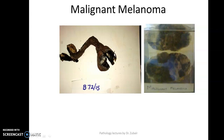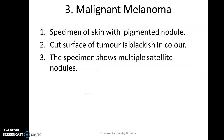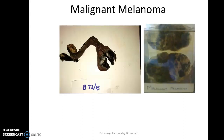Questions can then be posed. From a general pathology point of view, the examiner can ask for examples of pigments. You would say pigments are endogenous pigments and exogenous pigments. Endogenous pigments include melanin and lipofuscin. Exogenous pigments include anthracotic pigment and tattooing. So: specimen of skin with a pigmented nodule, cut surface of tumor is blackish in color, the specimen shows multiple satellite nodules.